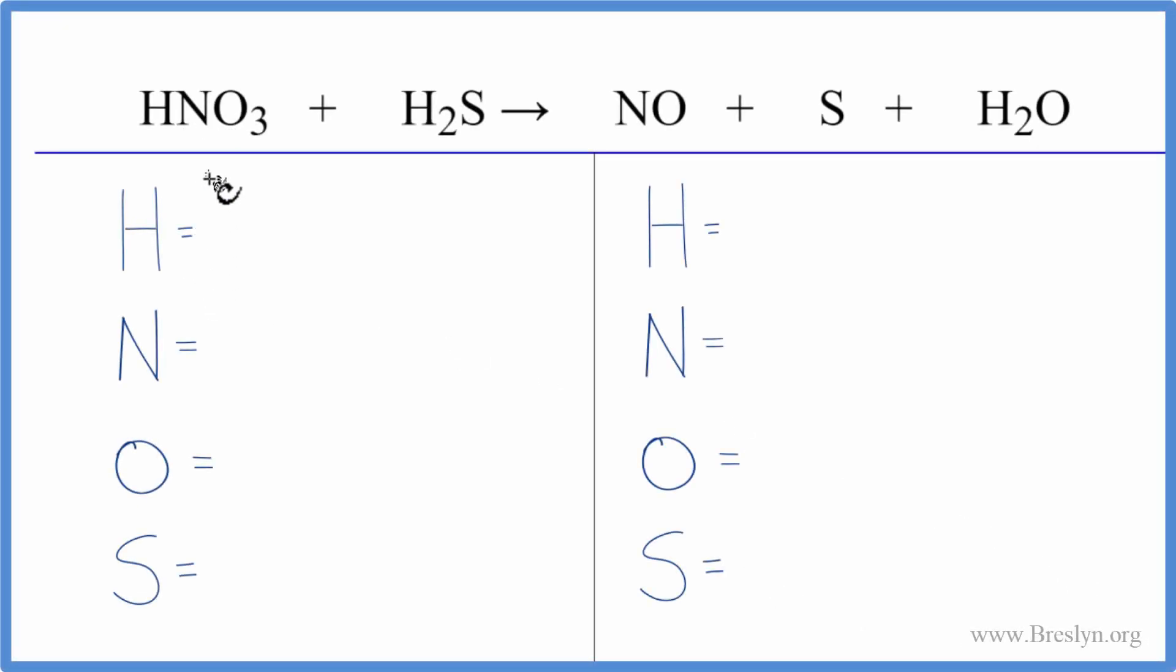In this equation, we have HNO3 plus H2S. Let's count the atoms up on each side and balance the equation. We have one hydrogen plus these two hydrogens here, so we have a total of three hydrogen atoms. We have one nitrogen, oxygen three, and then one sulfur.